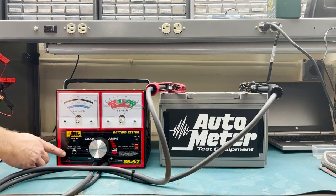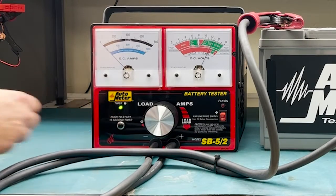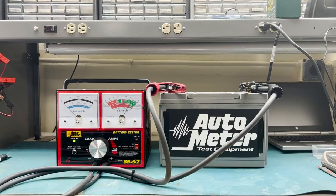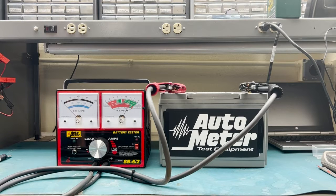This tester also has a built-in timer. When you push that button, that light is going to stay lit for 15 seconds. This is important because when you load test a battery, you want to make sure that you load test it at half the CCA for 15 seconds.